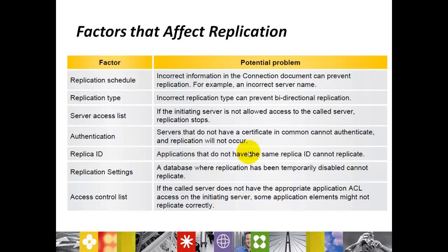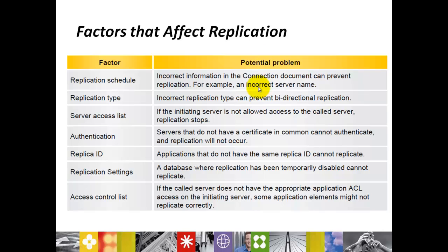Factors that affect replication. The major factors are: Replication Schedule, Type of Replication, Server Access List, Authentication, Replica ID, Replication Settings, and Access Control List (ACL). An incorrect replication schedule or incorrect information in the connection document — such as an incorrect server name or IP address — can prevent replication. An incorrect replication type can prevent bidirectional replication.